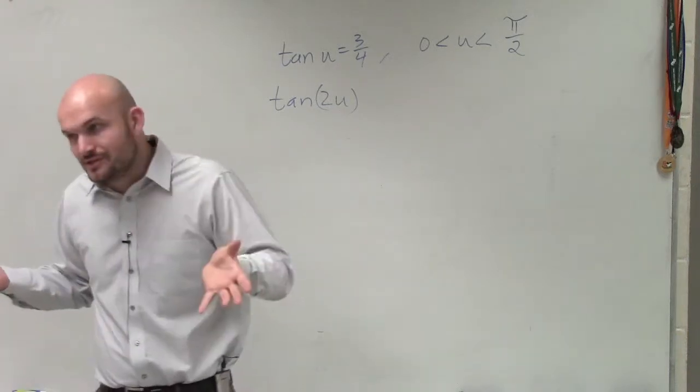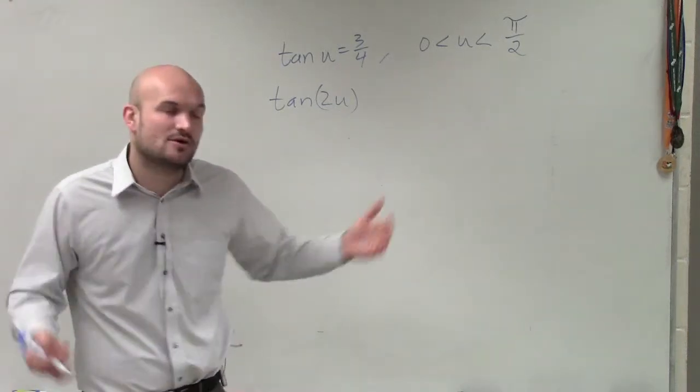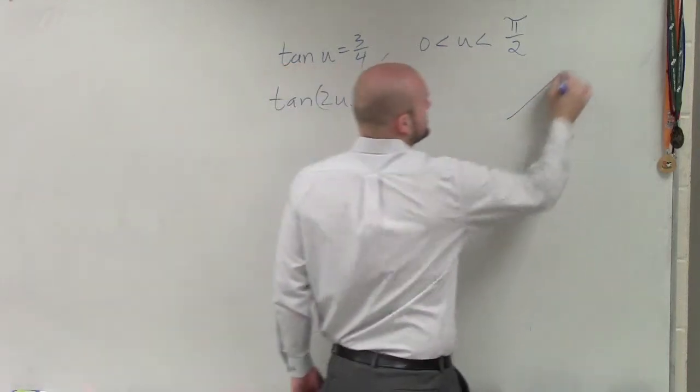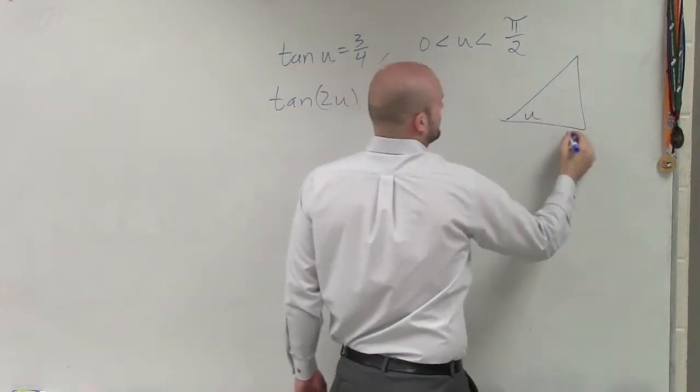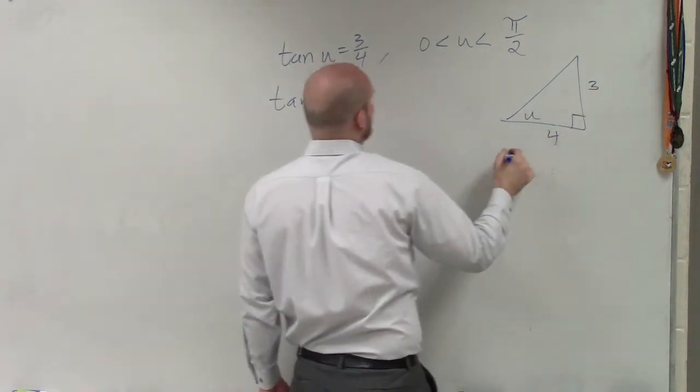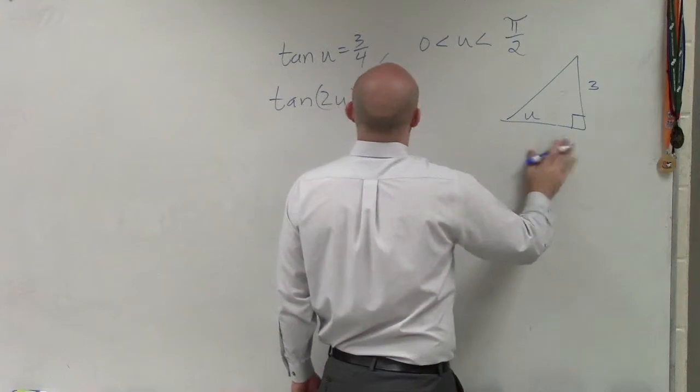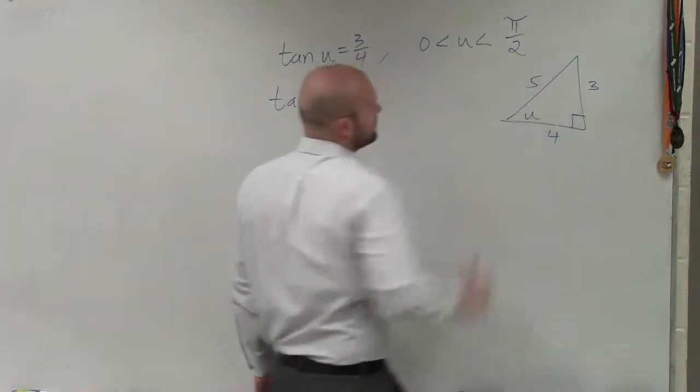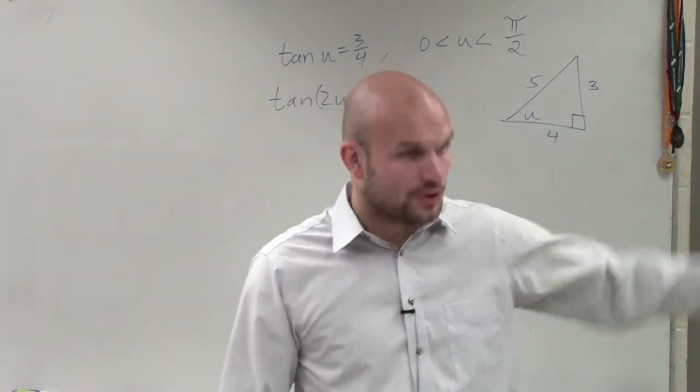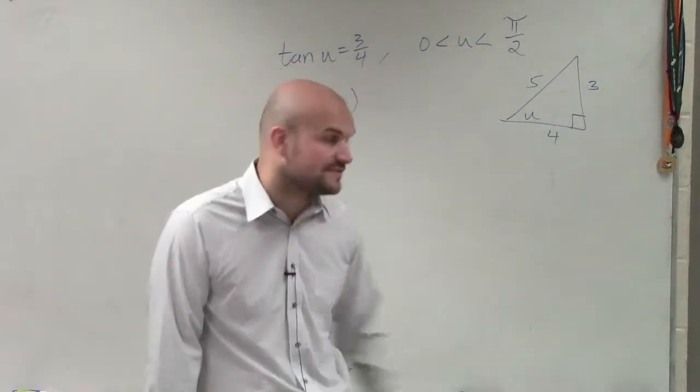So to evaluate for tangent u, we don't really need to care about the triangle. However, if we were going to do the sine and the cosine, we would want to make sure we know our triangle is going to be within our constraint between 0 and π/2. So therefore, it's going to be in the first quadrant. And we'd already have 3 over 4, opposite over adjacent. And then we know that would be a positive 5, just in case, for your guys' own benefit. Because if I asked you to do cosine of 2u and sine of 2u.